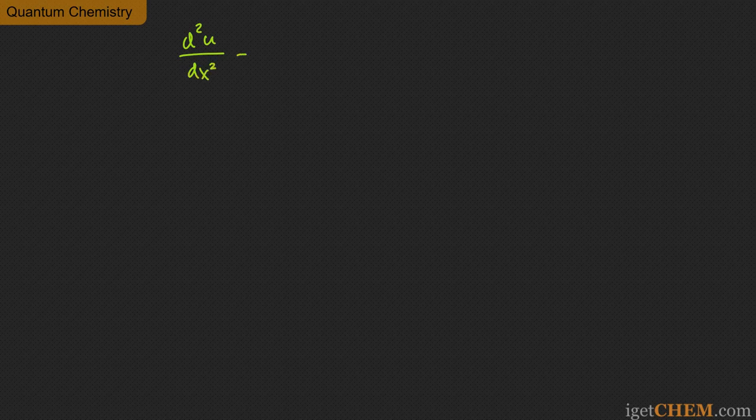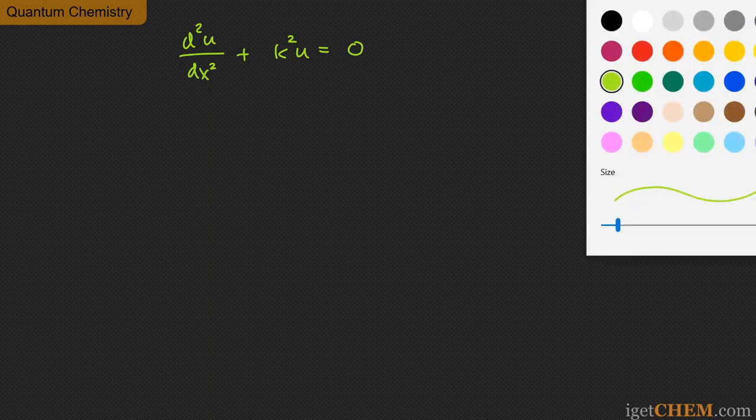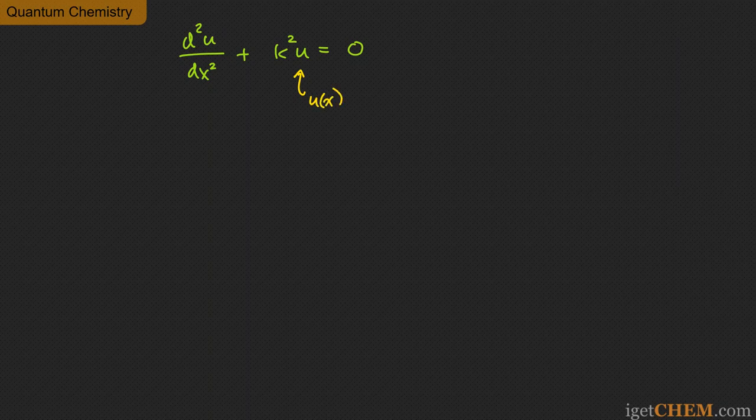I picked this problem because it illustrates an important idea behind what are called linear operators in quantum mechanics. But before I talk about that, let's look at just the mathematics. The equation is d²u/dx² + k²u = 0, where u is implied to be a function of x. Not every functional form of u(x) would satisfy this equation — there are certain functions u that might satisfy it, and that's what's meant by the solutions of this equation.